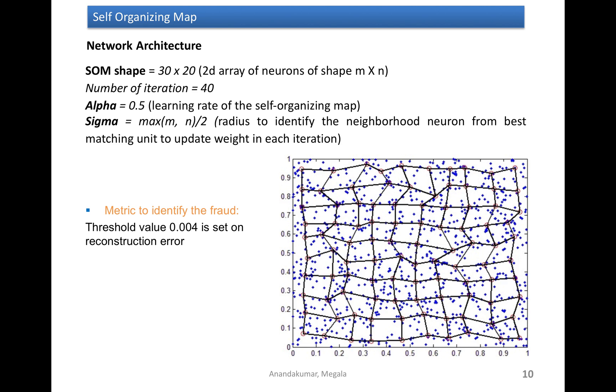And I kept the sigma value as max of m,n divided by 2. The sigma value is the radius that helps to identify the neighborhood neuron from the best matching neuron corresponding to a given training. For example, this neuron is considered as a best matching neuron. Based on the sigma value, the remaining neurons closer to this one are considered to update its weights.